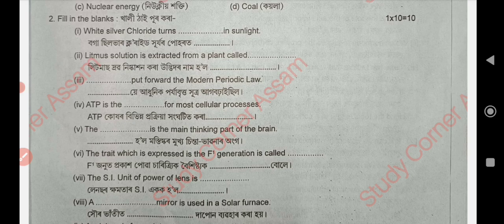ATP is the currency for most cellular processes. That is, ATP is the energy currency used in various cellular processes. The cerebrum is the main thinking part of the brain — answer: pro-mosttisko (forebrain).